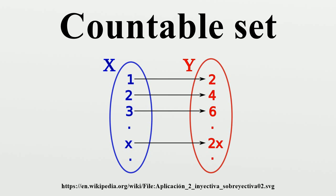In the Western world, different infinities were first classified by Georg Cantor around 1874. A set is a collection of elements and may be described in many ways. One way is simply to list all of its elements; for example, the set consisting of the integers 3, 4, and 5 may be denoted {3, 4, 5}.